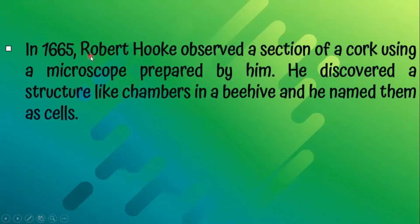In 1665, Robert Hooke observed a section of cork using a microscope prepared by him. He discovered a structure like chambers in a beehive and he named them as cells.